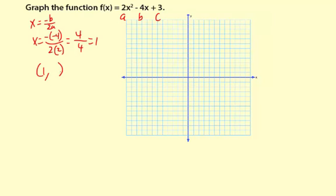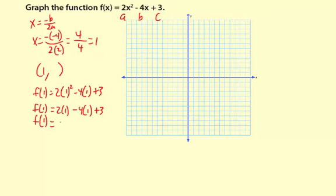The y value we don't know yet, but you can find it by substituting 1 in for x. You put the input of 1 and your output for f(x) is going to be the y value of the vertex. So f(1) = 2(1)² - 4(1) + 3. f(1) equals 2 times 1 minus 4 times 1 plus 3. Simplifying further, f(1) = 2 - 4 + 3, so f(1) = 1.